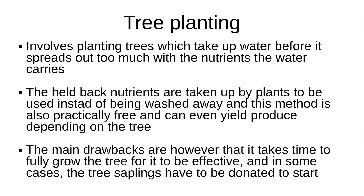Tree planting is another successful strategy which involves planting trees that take up water before it spreads out too much with the nutrients it has picked up. The held back nutrients are taken up by plants to be used instead of being washed away, and this method is also practically free and can even yield produce to be sold depending on the tree. The main drawbacks are that it takes time to fully grow the tree for it to be effective and that in some cases the tree saplings have to be donated by outside bodies.